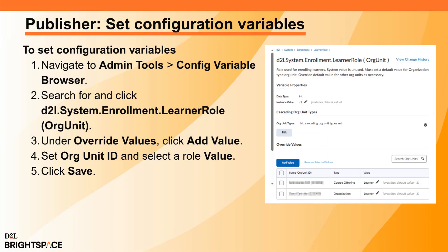Next, you must ensure that when you deploy a course package to a recipient instance and a user launches that course package, they are automatically enrolled in that course as the correct role. For example, system administrators prefer recipients to be automatically enrolled in the deployed course as learners. Navigate to Admin Tools, Config Variable Browser, and search for d2l.system.enrollment.learnerrole unit. Under Override Values, click Add Value, define the desired org unit ID, select a role value, and click Save.